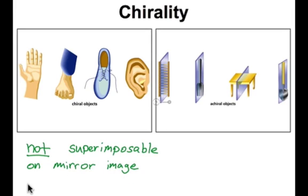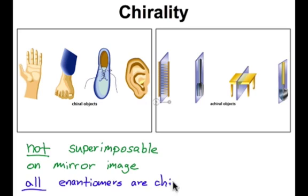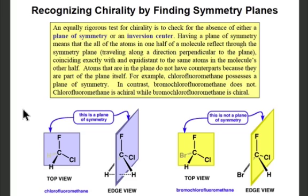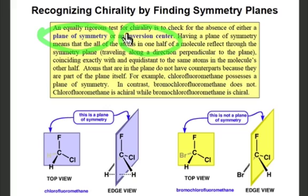That sounds an awful lot like enantiomers. Enantiomers, as you might recall, could not be superimposed on their mirror images, so we can say that all enantiomers are indeed chiral. In deciding if a molecule is chiral or achiral, that definition is somewhat impractical. There's an easier and more efficient way: any molecule that possesses a plane of symmetry or an inversion center lacks chirality and is achiral.